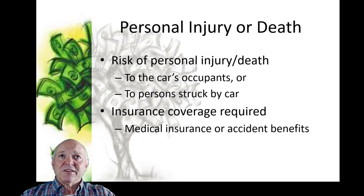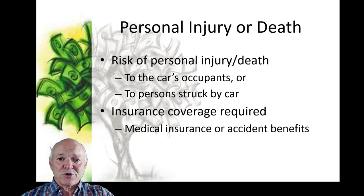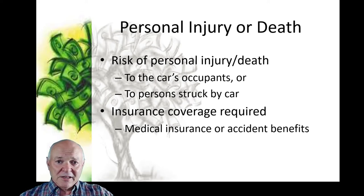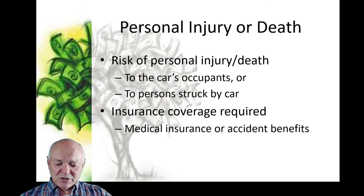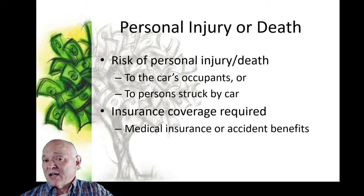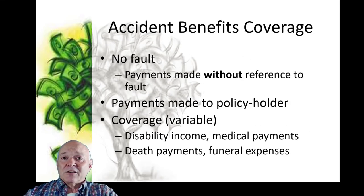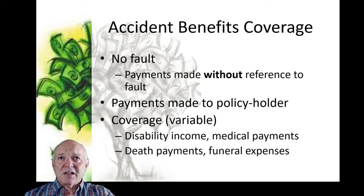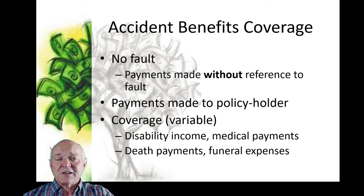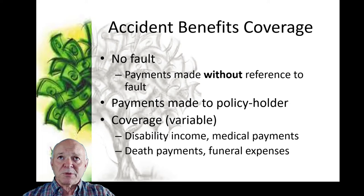Negligence falls into two categories. Ordinary negligence is failing to do what's reasonable or failing to protect someone against unreasonable activities. Gross negligence is not just an insurance problem but may be a criminal act — reckless, wanton, willful misconduct. A road rage incident involves willfulness, with consequences beyond insurance. Personal injury or death affects people in or struck by your car; there will be accident benefits within policy limits, which in British Columbia are now quite restricted. British Columbia has a partial no-fault system where payments are made without reference to fault — covering disability income, medical payments, death benefits, and funeral expenses.